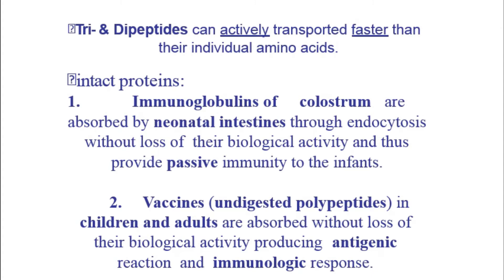Some proteins are absorbed in an intact form. Examples include immunoglobulins found in colostrum of the mother's milk and vaccines. These proteins can be absorbed intact via the process of endocytosis.